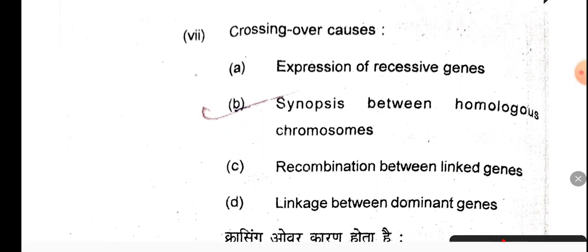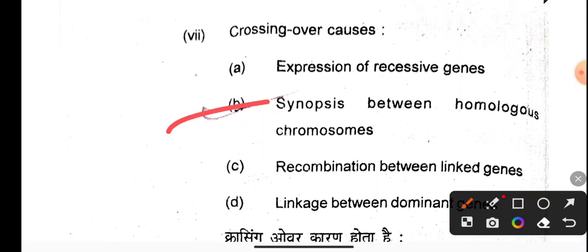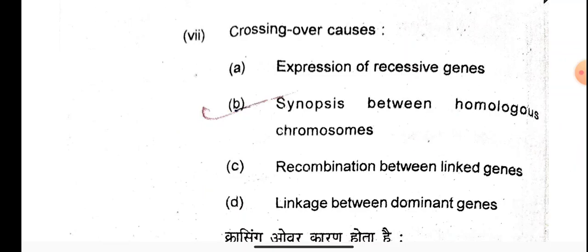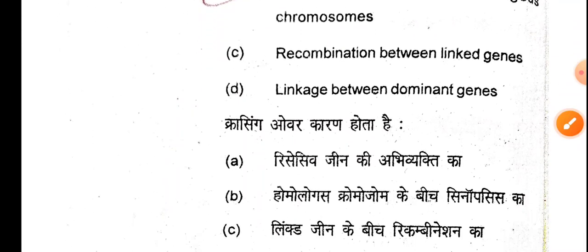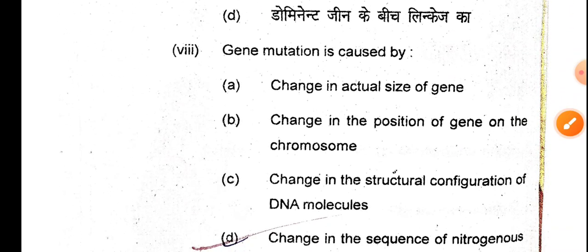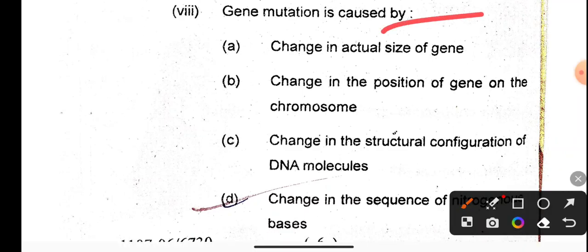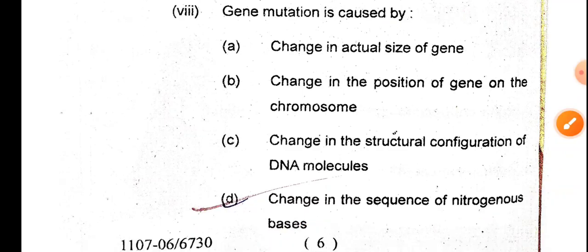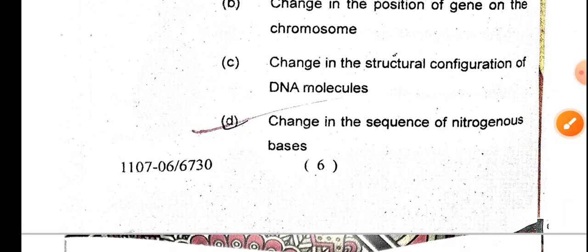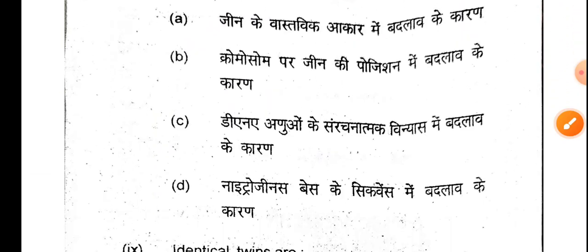Crossing over involves synapsis between homologous chromosomes, with interchange of genetic material. Gene mutation is caused by a change in the sequence of nitrogenous bases.